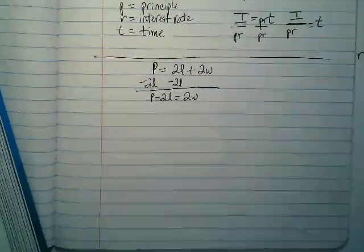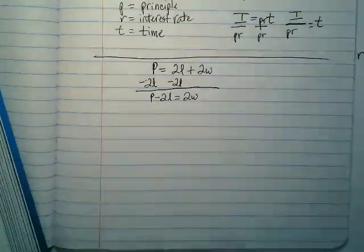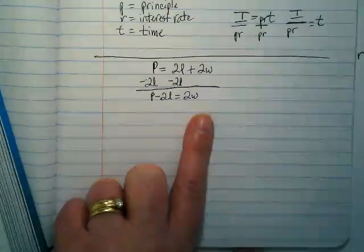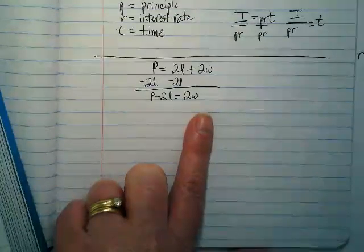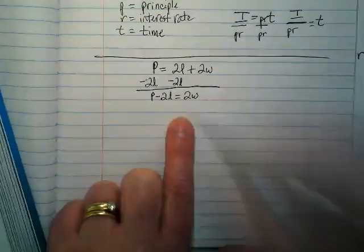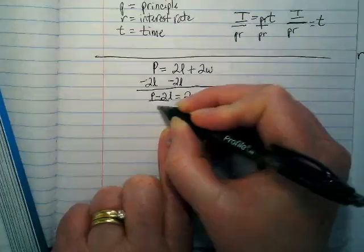Why is it 2L and 2W? Because on a rectangle there's two lengths and there's two widths. I want this by itself. What's with it? And it's being multiplied, so we want to divide. And if I divide it from this side, I also have to divide it from this side.